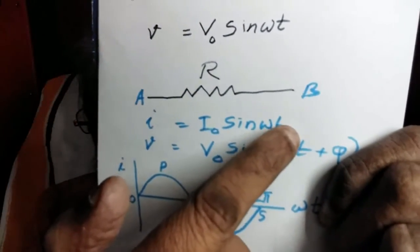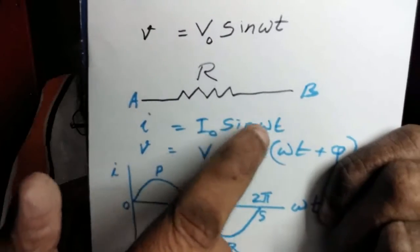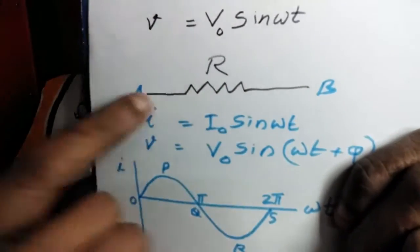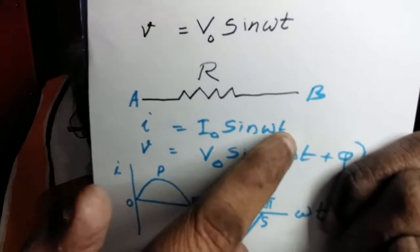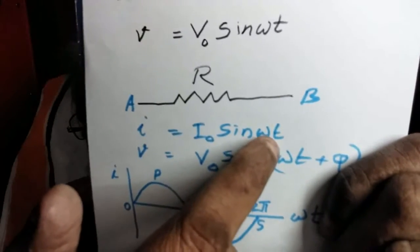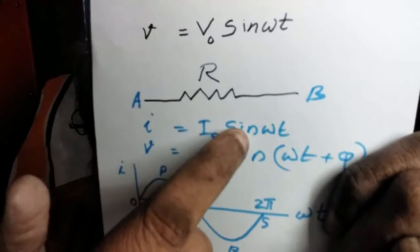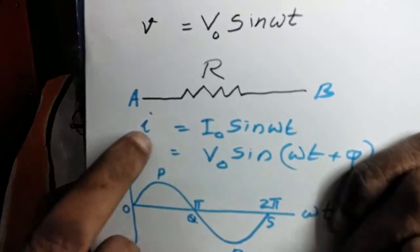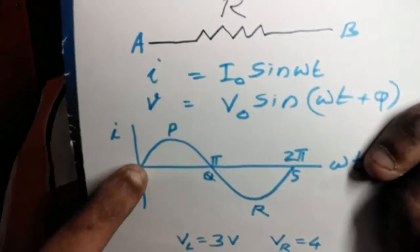At t equals zero, I equals I₀ into sine zero, that is zero. So current in the resistance is zero. As time advances, omega t increases, so sine omega t increases and it becomes maximum value one.